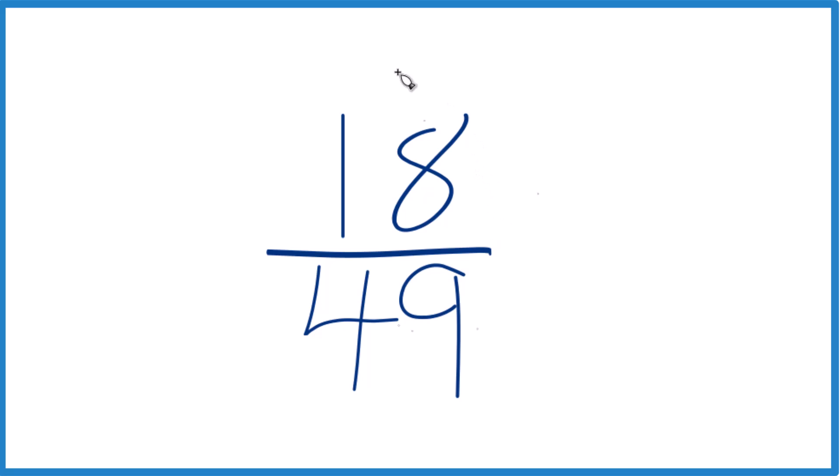So we need to find the factors of 18 and 49. Those are the whole numbers that go evenly into 18 and 49. We want to find what's in common.